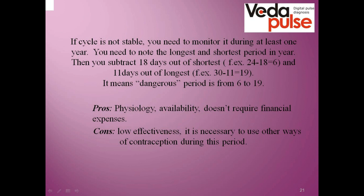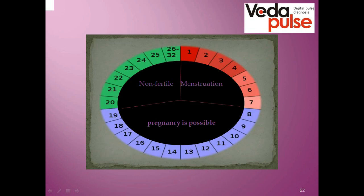However, natural contraception has low effectiveness, and it is necessary to use other methods during this period as you can't fully rely on this approach. On this slide, cycles are split into non-fertile and fertile periods. Non-fertile is when pregnancy is not possible — since the ovum is just starting to develop, there could be no pregnancy. Then during ovulation, the ovum is matured and pregnancy becomes possible. The maximum fertility period is from day 8 to day 19, and then the egg cells die if there is no fertilization.